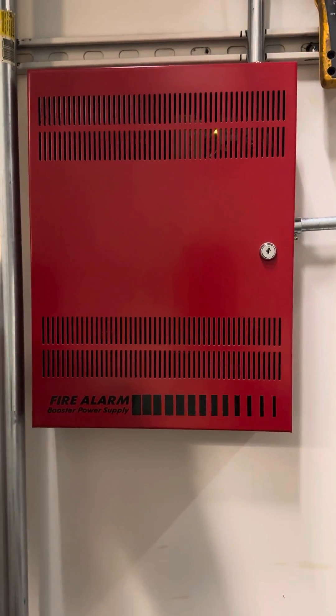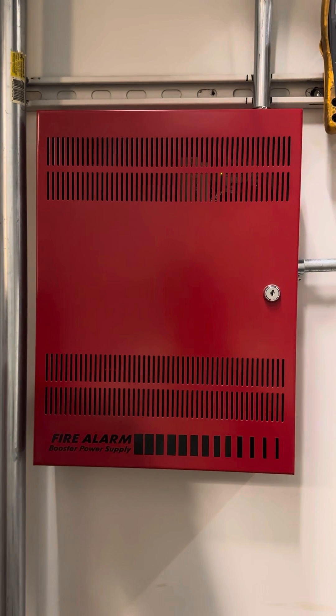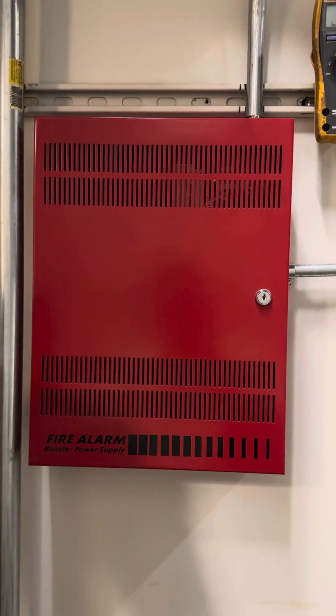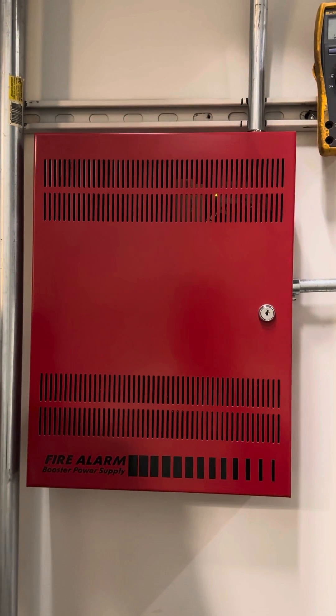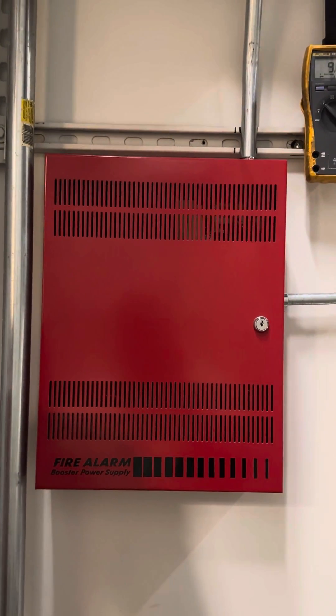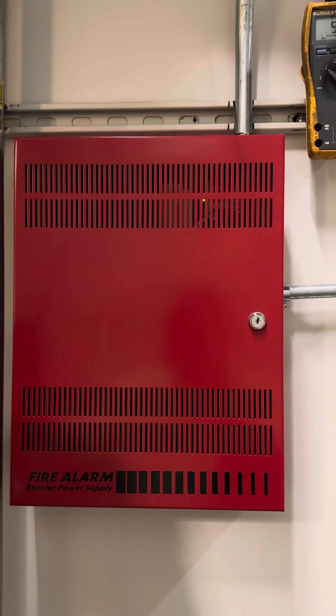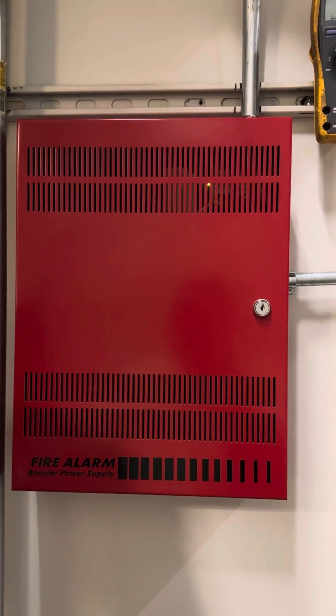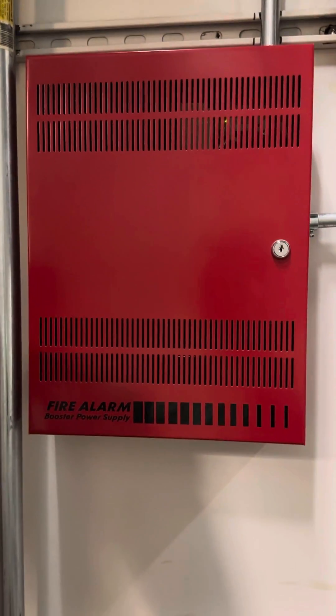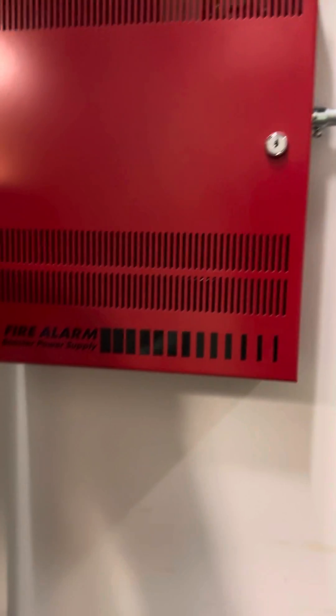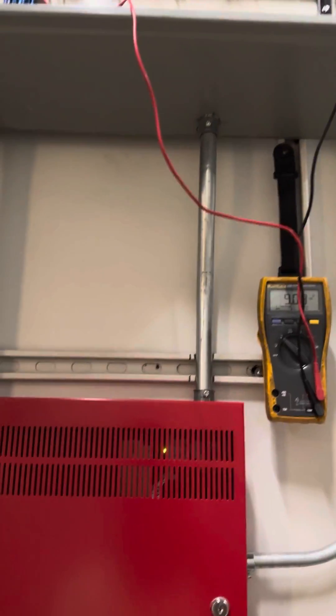What's going on everyone, so today we are troubleshooting an Edwards BPS. I have an issue where the 24 volts on the amplifier output is reading 9 volts. So typical scenario in a building like this, the devices go bad.